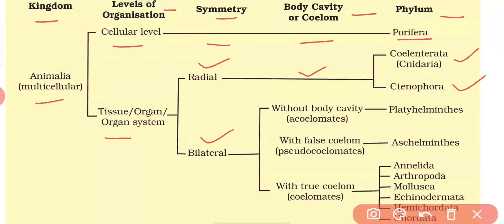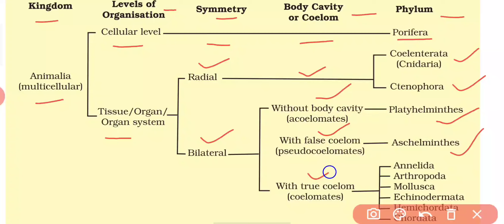In bilateral symmetry, organisms are classified into three types based on their coelomic cavity. First is without body cavity — acoelomate — which includes only Platyhelminthes. Second is having a false coelom — pseudocoelomate — which includes only Aschelminthes. Third is having a true coelom — coelomate — which includes Annelida, Arthropoda, Mollusca, Echinodermata, Hemichordata, and Chordata.